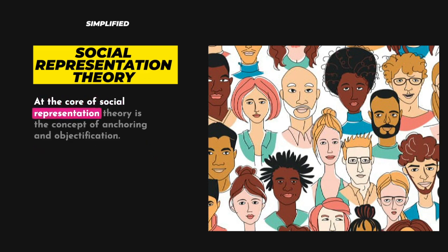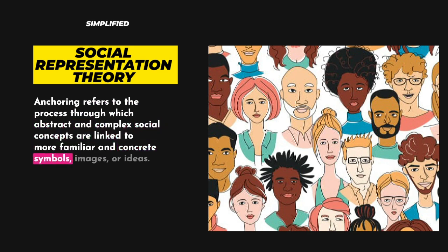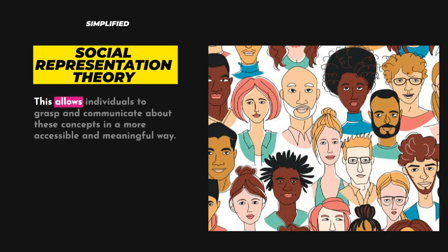At the core of social representation theory is the concept of anchoring and objectification. Anchoring refers to the process through which abstract and complex social concepts are linked to more familiar and concrete symbols, images, or ideas. This allows individuals to grasp and communicate about these concepts in a more accessible and meaningful way.